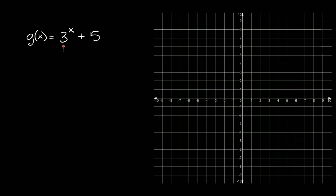I don't see any negative signs or symbols in here, so it doesn't look like we're going to have a reflection. So in this case, we're going to have an exponential growth function. We also have this number at the end — this plus five — and this tells us where our asymptote is. So it's going to be right here at y is equal to five. So we have an asymptote right there.